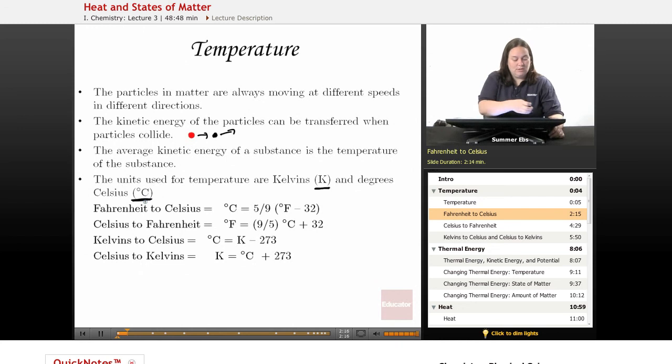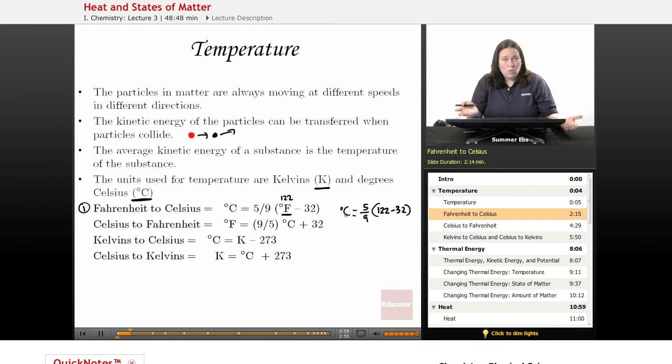So we'll take a look at this first one, Fahrenheit to Celsius. If you are given degrees Fahrenheit and you want to change it into Celsius, this is what you use. So if you are out in the desert and it's 122 degrees out, you're going to use this formula. You substitute that in for that F. So you're going to end up with 122 minus 32, and that will be in your parentheses. You're going to multiply that number by 5/9, and that will give you your degrees Celsius. So order of operations, you need to do what's in the parentheses first. 122 minus 32 is going to give you 90.